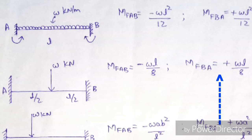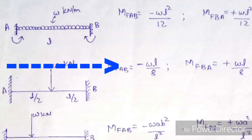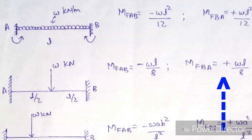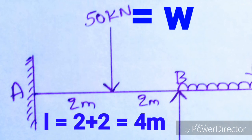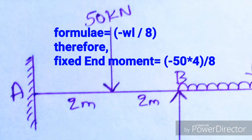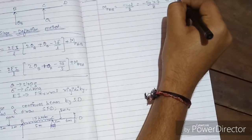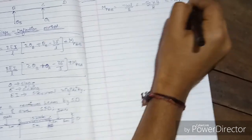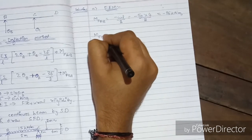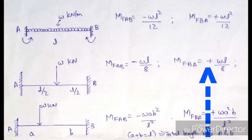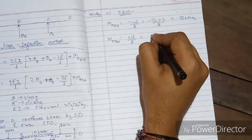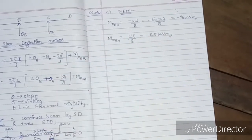Between A and B there is a point load acting exactly at the center. According to the chart, MF_AB = −WL/8 and MF_BA = +WL/8. Always remember: going from left to right (A to B) is negative, and right to left is positive. Here W = 50 and L = 4, so MF_AB = −50×4/8 = −25 kN·m, and MF_BA = +25 kN·m.